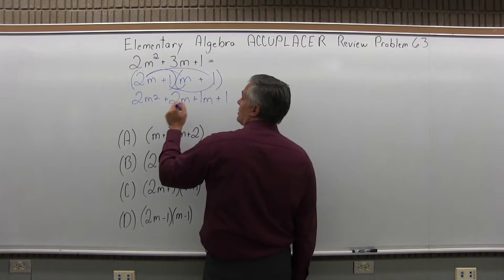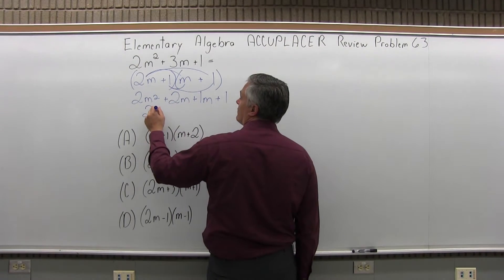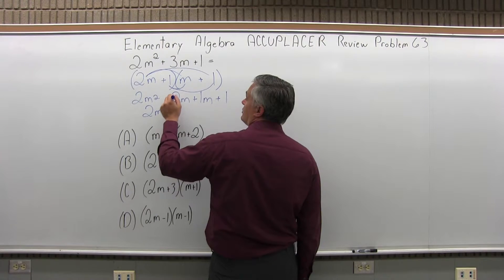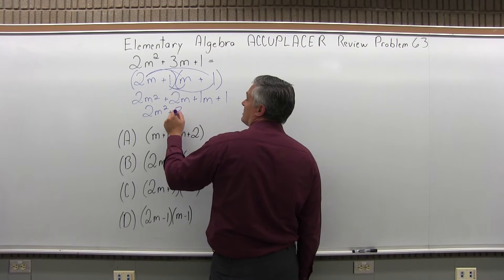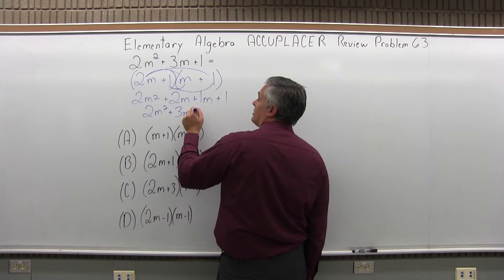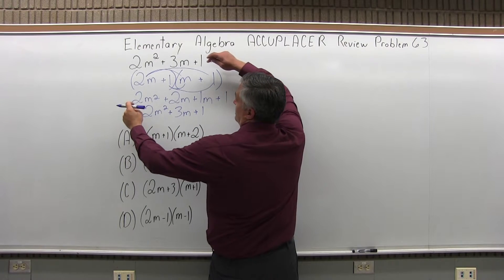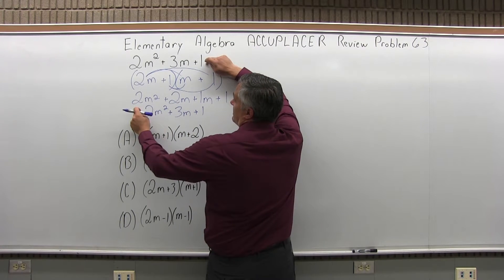Combine the 2m and the 1m in the middle, the 2m² in front will stay in front. 2m and 1m both positive will be positive 3m and then plus 1 at the end. When I multiply it out, it does give me back the original question.